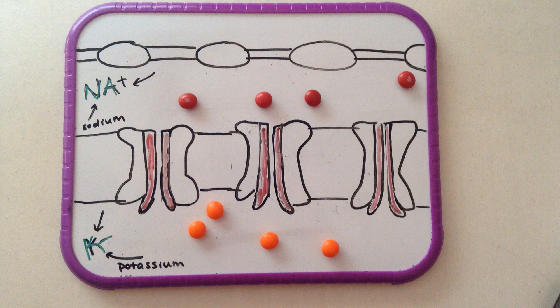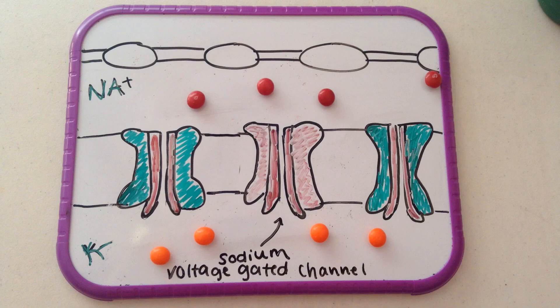These right here are sodium voltage-gated channels, which are proteins that allow sodium ions to flow down their electrochemical gradient and cross the cell membrane. A length constant is the distance that a membrane potential will travel along a passive electrical conduction.